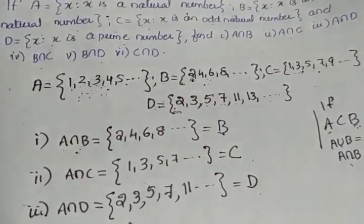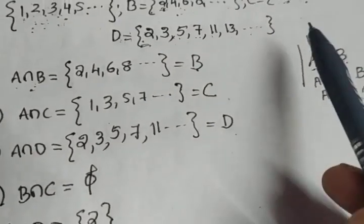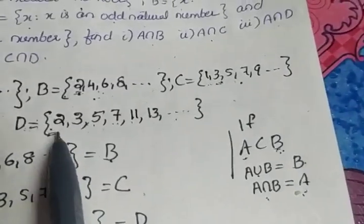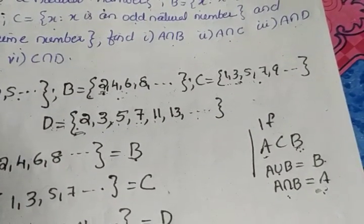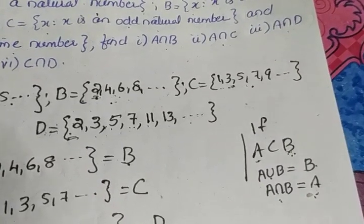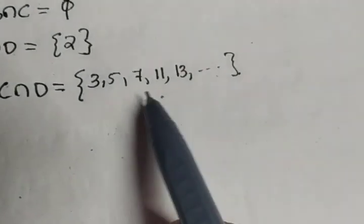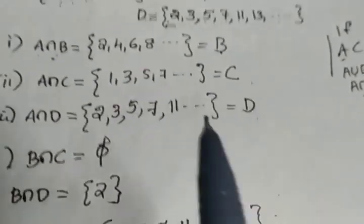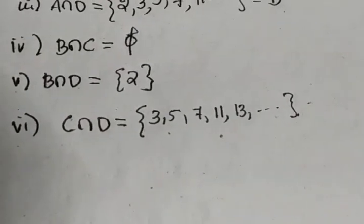Last question: C intersection D. C = {1, 3, 5, 7, 9, 11, ...} and D = {2, 3, 5, 7, 11, ...}. The common elements are {3, 5, 7, 11, 13, ...}. Can we write this as equal to D? No, because D contains 2, but in our answer there is no 2. So C intersection D equals the set of odd prime numbers.